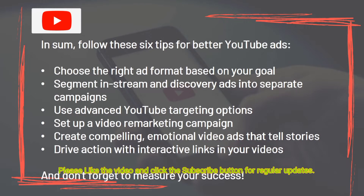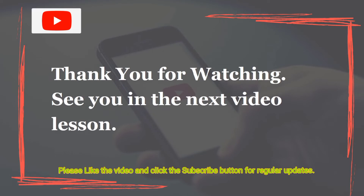In summary, follow these six tips for better YouTube ads: choose the right format based on your goal; segment in-stream and discovery ads into separate campaigns; use advanced YouTube targeting options; set up a video remarketing campaign; create compelling emotional video ads that tell stories; drive action with interactive links in your videos; and don't forget to measure your success. Thank you for watching — see you in the next video lesson.